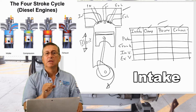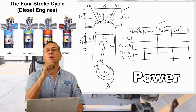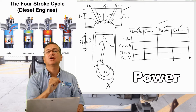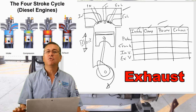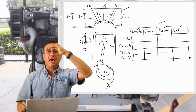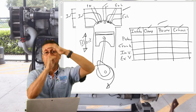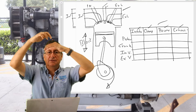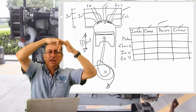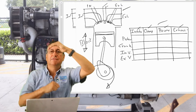Intake, compression, power, and exhaust — those are the typical four strokes. Suppose that this is the head and this is the piston, and in the head I have two valves: intake valves and exhaust valves.